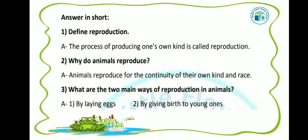What are the two main ways of reproduction in animals? Animals में कौन से दो ways हैं कि जिससे reproduction होता है? First is by laying eggs — अंडे देना, and second is by giving birth to young ones — बच्चों को जन्म देना. तो ये दो तरीकों से animals वो reproduction करते हैं.